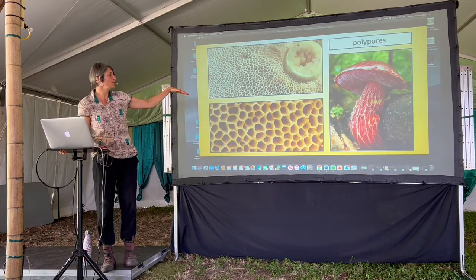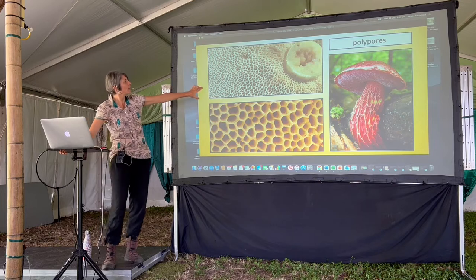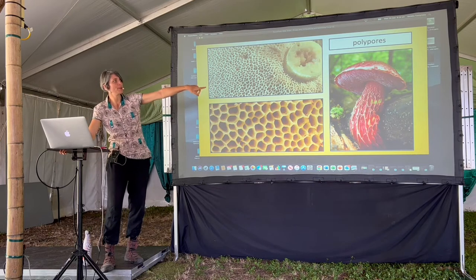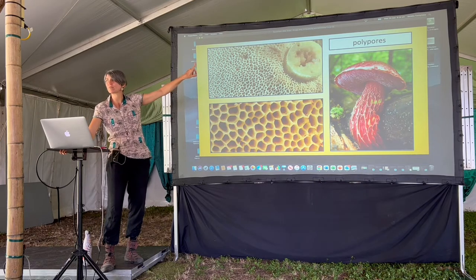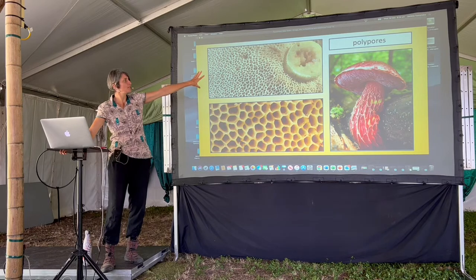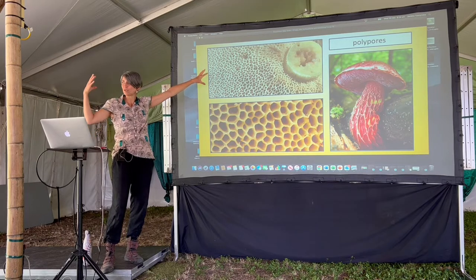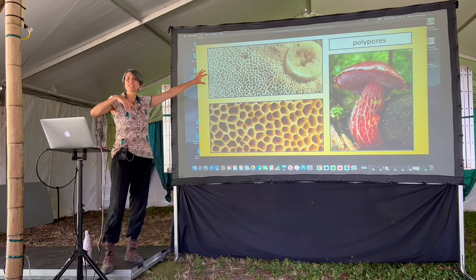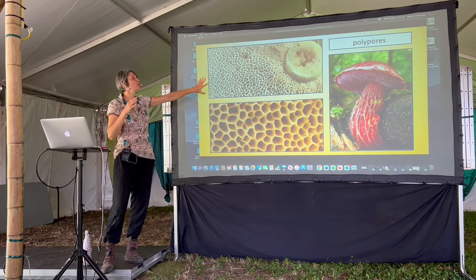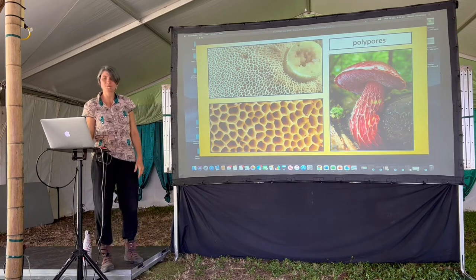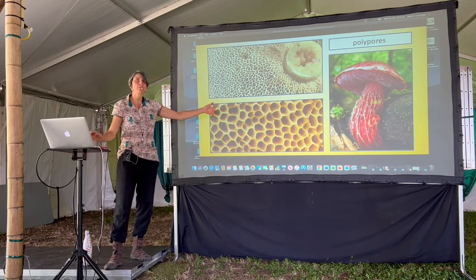Leathers last longer than those little mushrooms. Something like polypores — they've still got the stipe but they have pores underneath instead of gills. When you look underneath, you might think it's a gilled mushroom, but then you look and there's all this pore structure. That's where the spores come out — from either the gills or the pores — and that's how fungi reproduce.